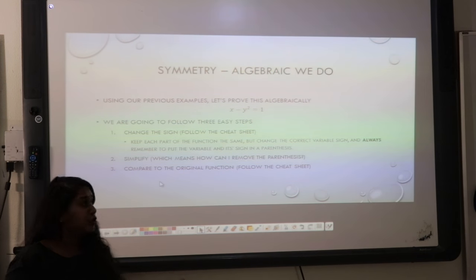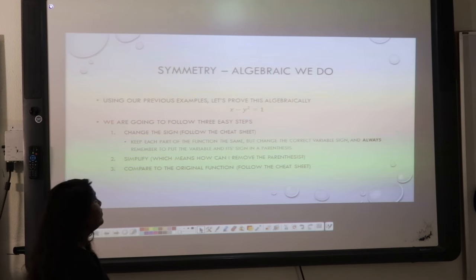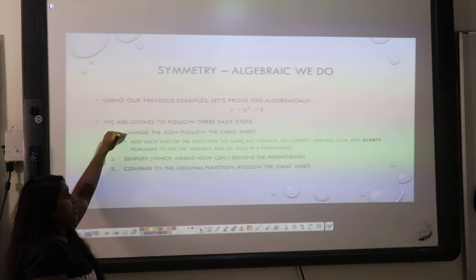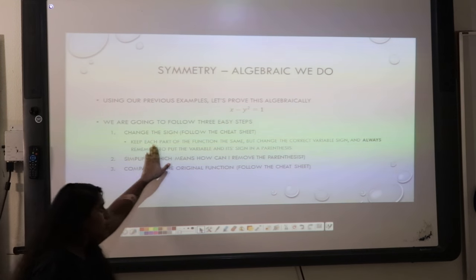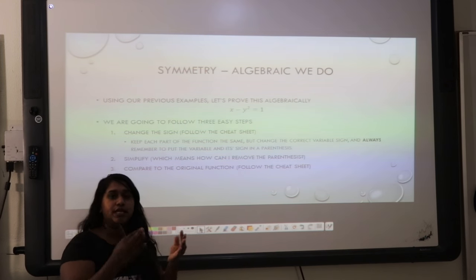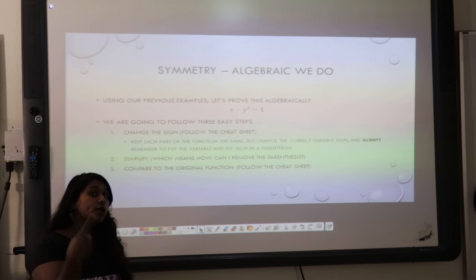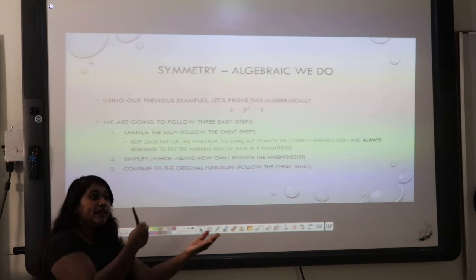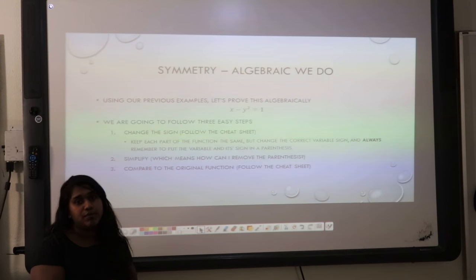So let's do the algebraic approach. We're going to look at that same original function: x minus y squared is equal to 1. We're going to do three simple steps. First, we are going to change the sign — follow that cheat sheet. Which test am I doing? Which sign am I changing? Which variable am I changing? To avoid errors, take that variable, place it in parentheses, put its negative in the parentheses, and all other function parts go outside the parentheses. Second, I'm going to simplify — what do I have to do to remove those parentheses? Finally, we're going to compare it to the original function. If it matches, we hit that test — it has symmetry. If it doesn't match, we either have to test others, or if we've tested all three, there is no symmetry.